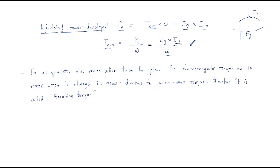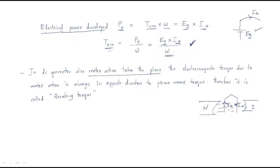In DC generators, it is a generator but motor action also takes place. It is a generator — but why does motor action take place? There is a magnetic flux and the armature current flows. When a current-carrying conductor is placed in a magnetic field, it gets some torque — it generates electromagnetic torque. That electromagnetic torque will be opposite to the prime mover torque.